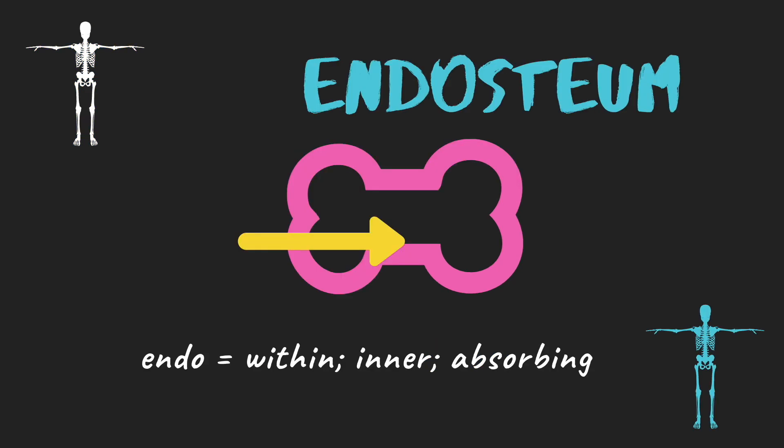Endosteum — 'endo' is the prefix, meaning within, inner, or absorbing. The endosteum is the inner aspect of the bone. 'Osteo' as a suffix just means bone, so it's the inner aspect of the bone — that's all the endosteum is referring to. It is the inner layer of the casing of the bone. The bone is hollow, and the endosteum is the inner layer, with the cavity inside it.